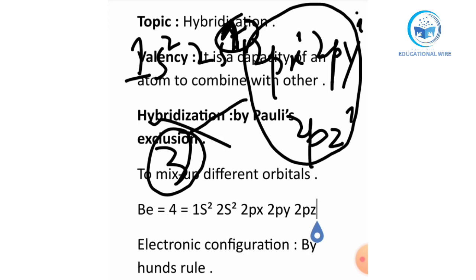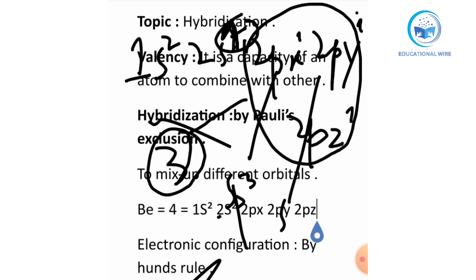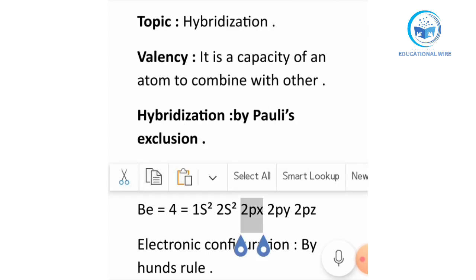According to Hund's rule it said two, but according to hybridization it says there are more. So what name do we give? Since 2px comes on the third position, we give the name sp3. These three — x, y, z — all combine together, so we give sp3. If there were just x and y, we would give sp2. This simple method explains hybridization and valence electrons. Hope you understood today's lecture, thank you so much for listening.